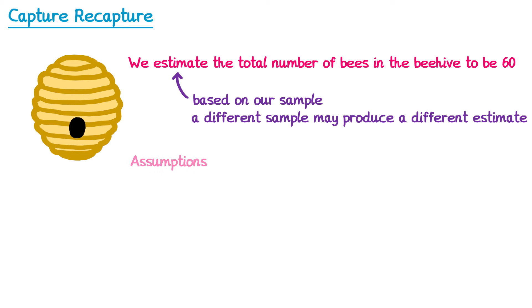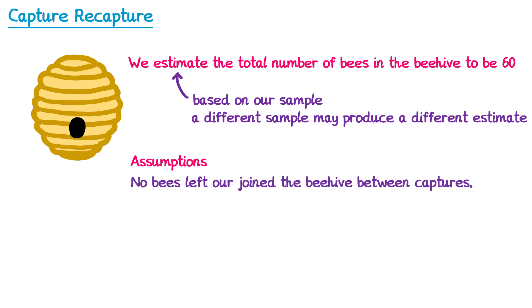We also made some assumptions that you need to be aware of — this sometimes comes up as an exam question. Firstly, we assumed that no bees left or joined the beehive between the captures, which in reality is perhaps unlikely to happen. We also assumed that all of the marks stayed on the bees. If some of the marks had fallen off, then in our second sample some bees that looked unmarked may have actually been marked, and this would affect our answer.